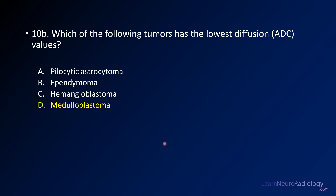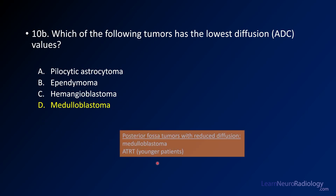As discussed, the tumors with the lowest diffusion values are medulloblastoma and ATRT. Since ATRT wasn't an option here, and going by age — a reduced diffusion, highly cellular mass in the posterior fossa: patients younger than two, think ATRT; two years or older, think medulloblastoma. That was the answer to this question. Key point: posterior fossa tumors with reduced diffusion — medulloblastoma and ATRT.